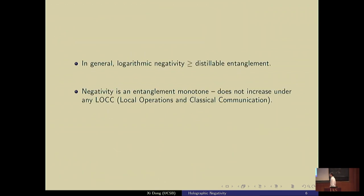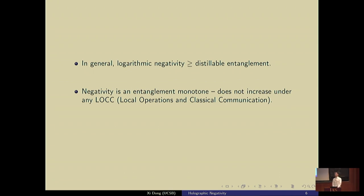In general, log negativity has a very nice interpretation: it provides an upper bound on the amount of distillable entanglement — basically asking how many EPR pairs you can possibly extract from the system AB. So log negativity should be thought of as a quantity that bounds that. Another nice property of negativity is that it is an entanglement monotone, so it doesn't increase under LOCCs.